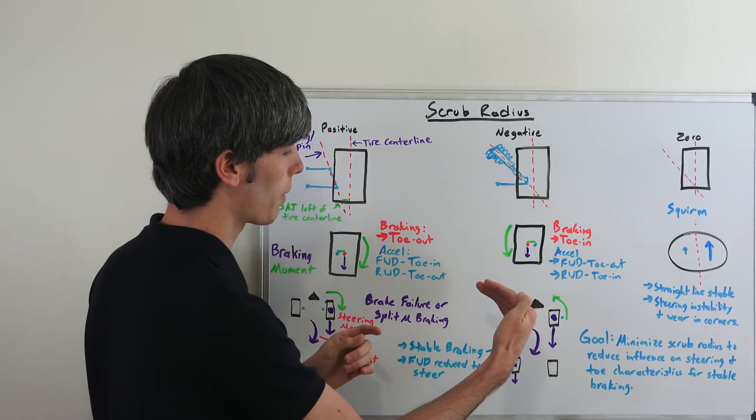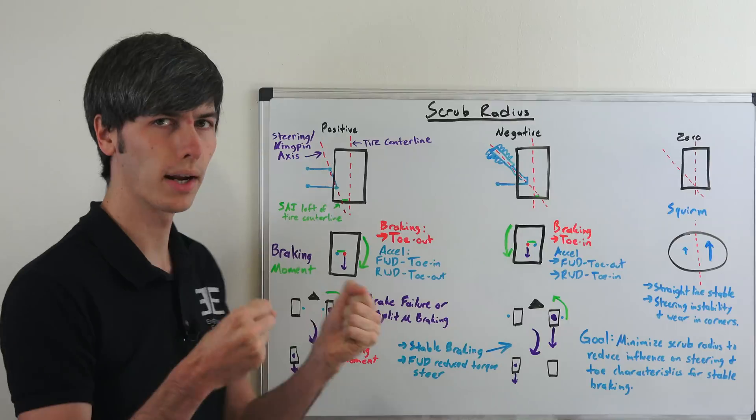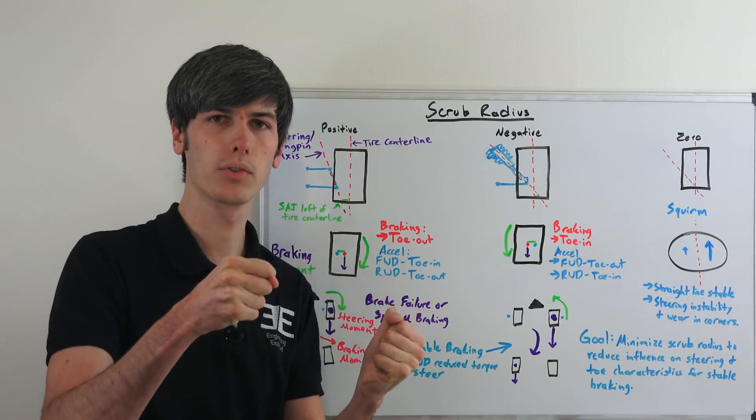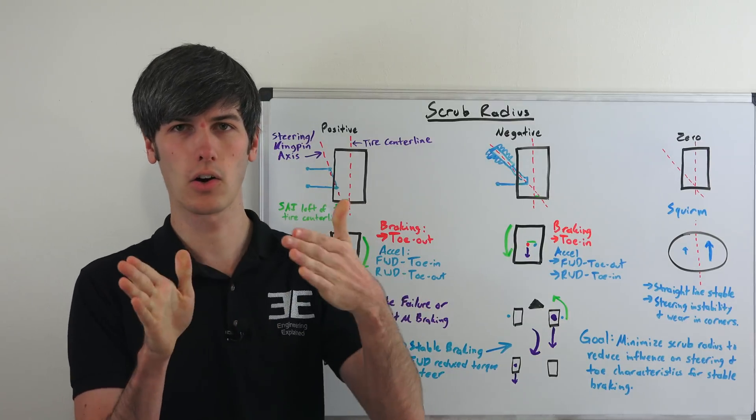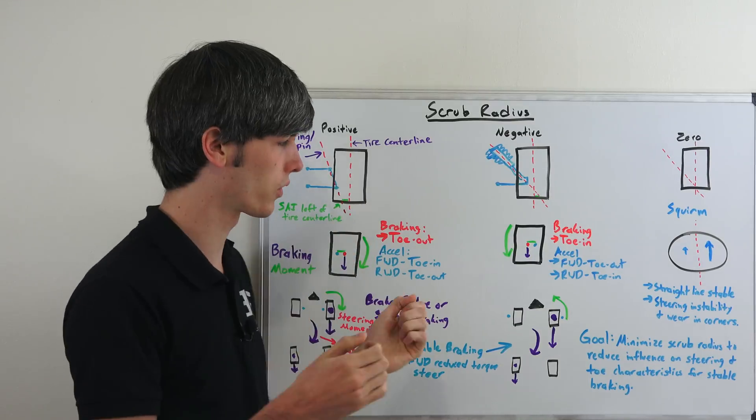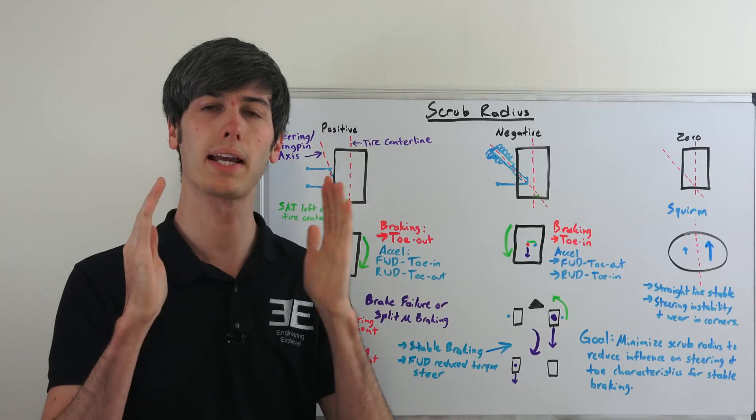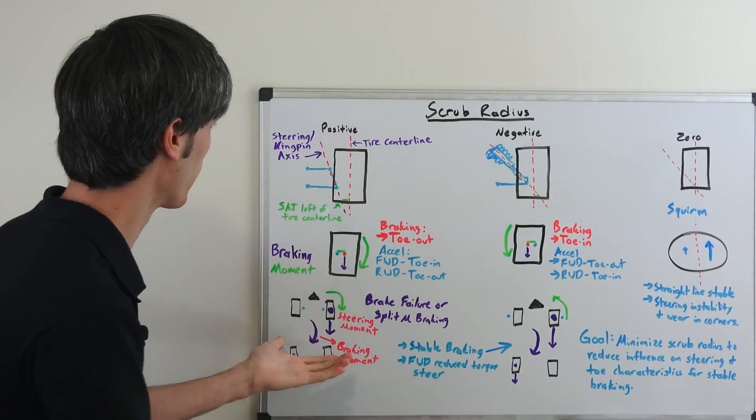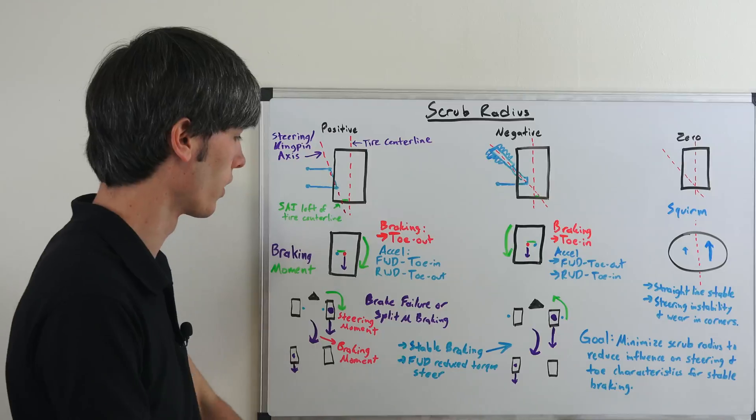that front tire wants to tow in so it wants to counter that rotation. So your steering moment is going to be in the opposite direction. And so as you're braking and coming to a halt your steering wheel is going to want to counter the car going to the other direction and so it's going to basically brake in a straighter line than if you used a positive scrub radius. So that's one of the benefits of it.